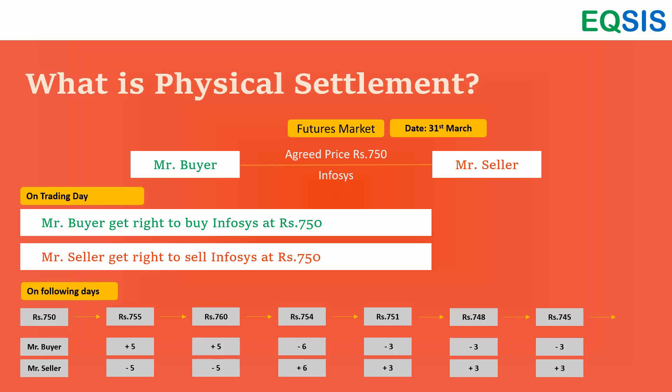If the price decreases, I as the buyer have to give money back to you. Say the price goes back to 754 — you get six rupees. Then 751, you get another three rupees. Then 748, another three rupees. Then 745, another three rupees. The next day if the price becomes 740, you get another five rupees. In total you got 10 rupees from my account. That is fair, because I agreed to buy shares from you at 750 and now the price is 740.